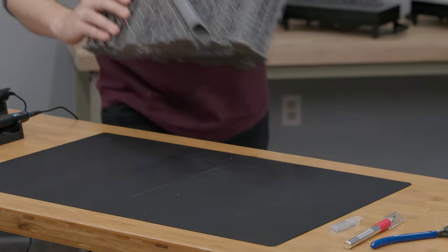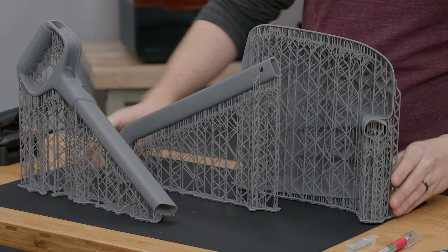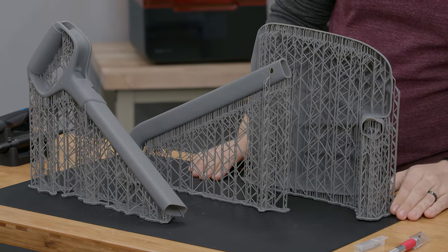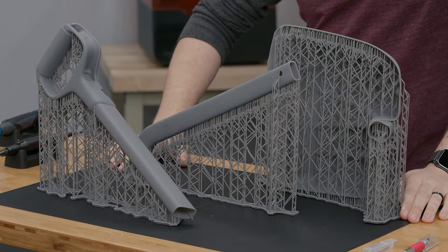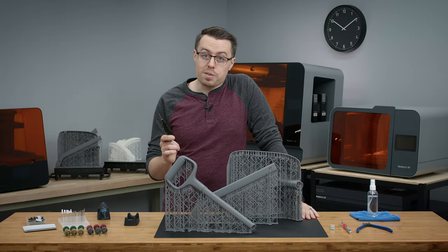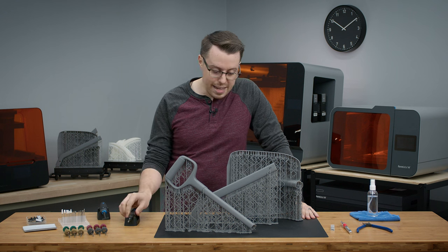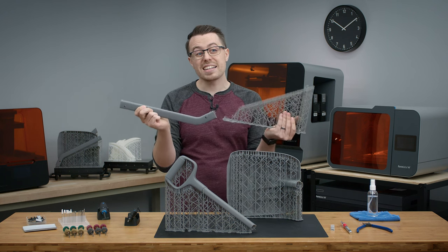So today we'll be working on this shovel prototype from Black Diamond and thinking about how to post-process using our finishing tools. So this part was printed in Gray V4 on a Form 3L all-in-one build platform. Now, typically, the rotary tool would be helpful for removing supports as well, but in this case, the light touch supports on the Form 3 and 3L, you kind of don't need it.